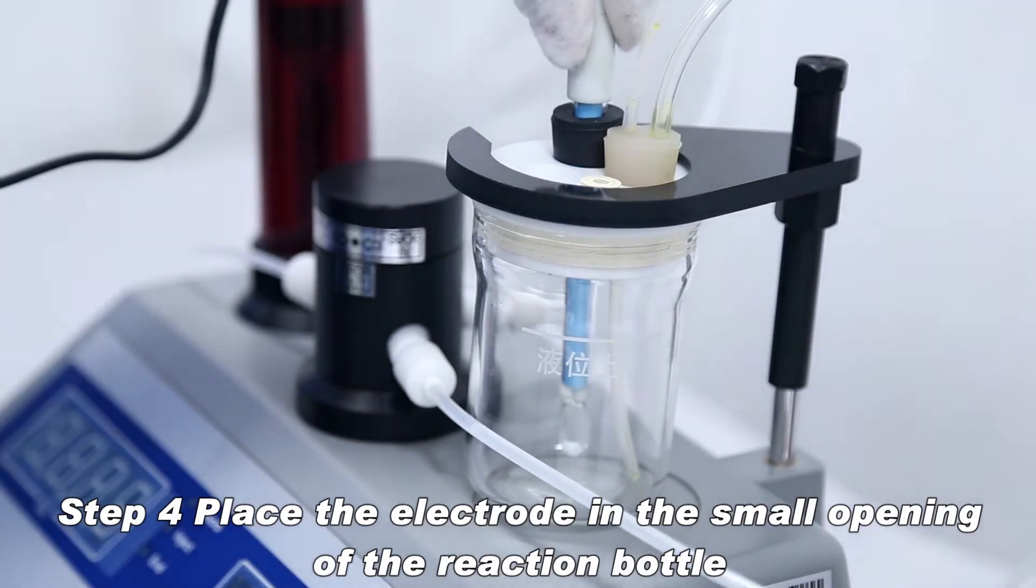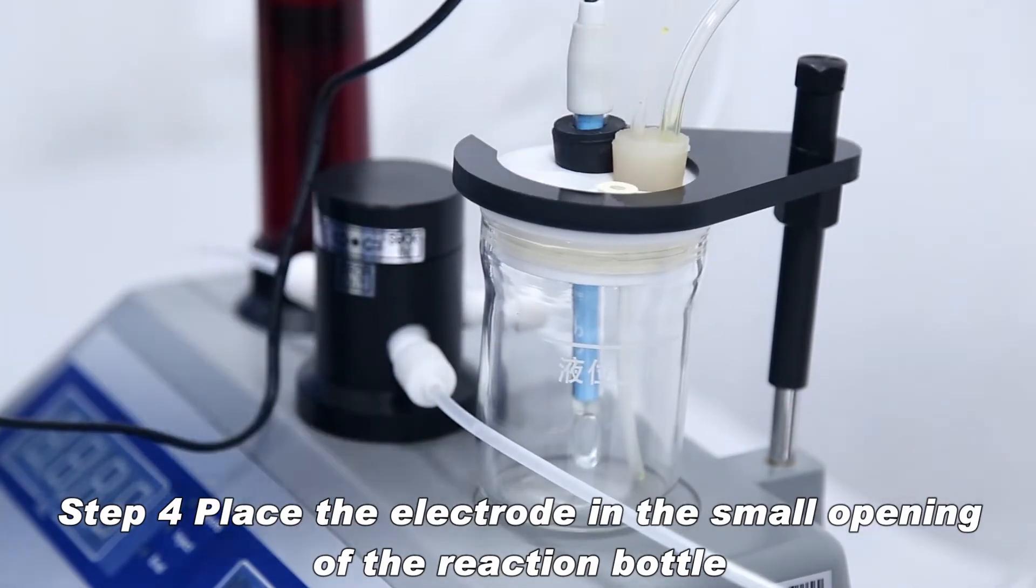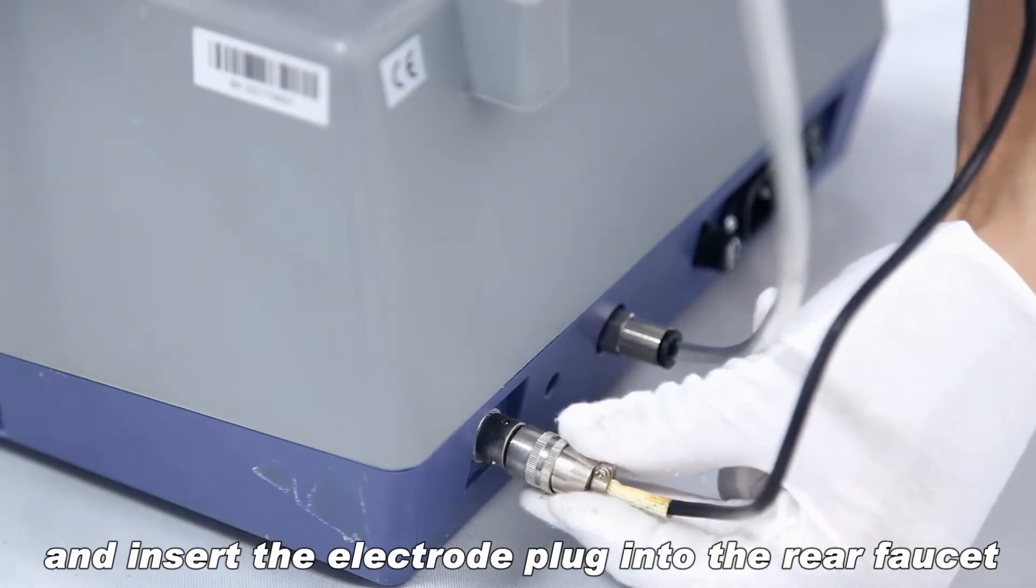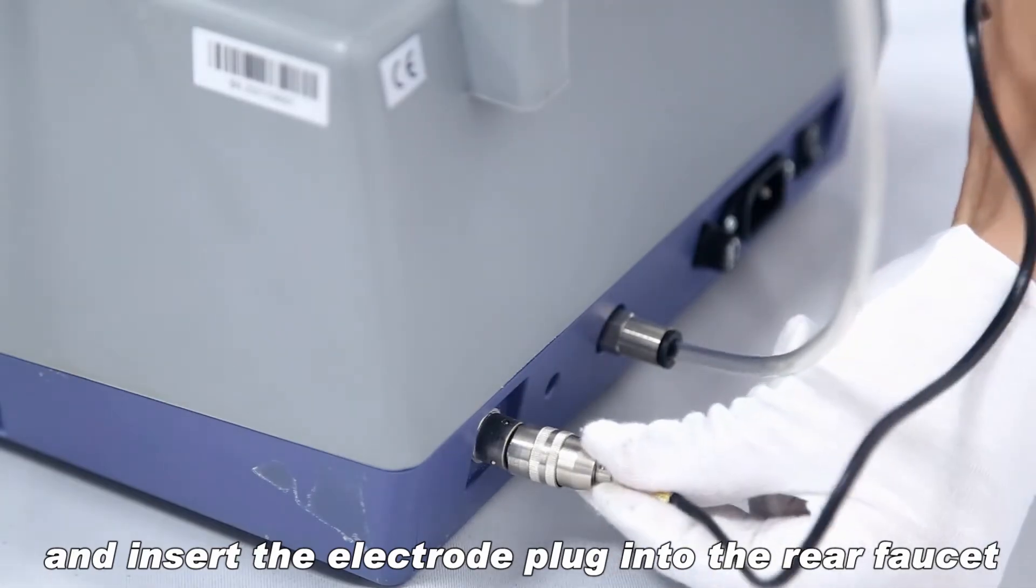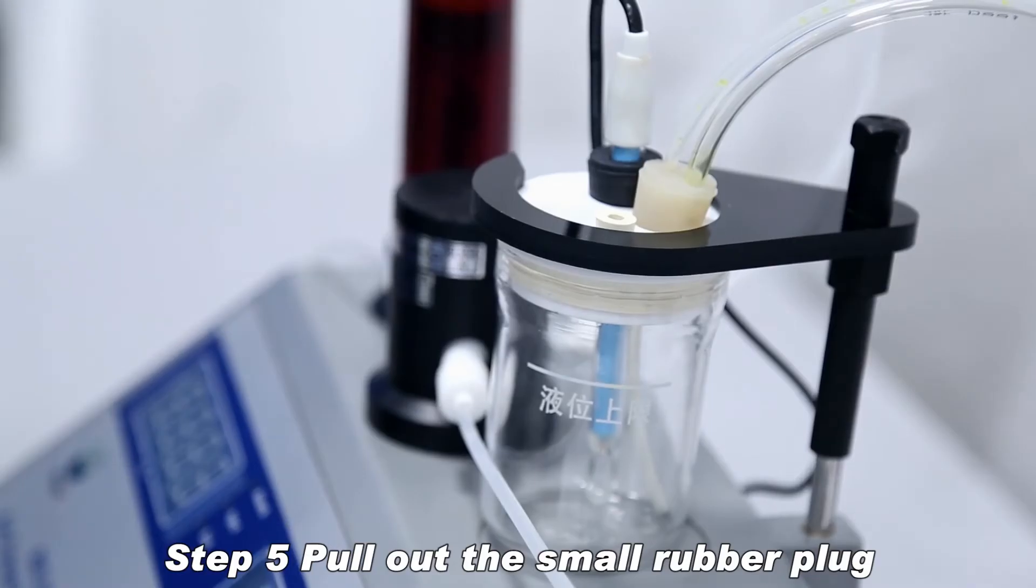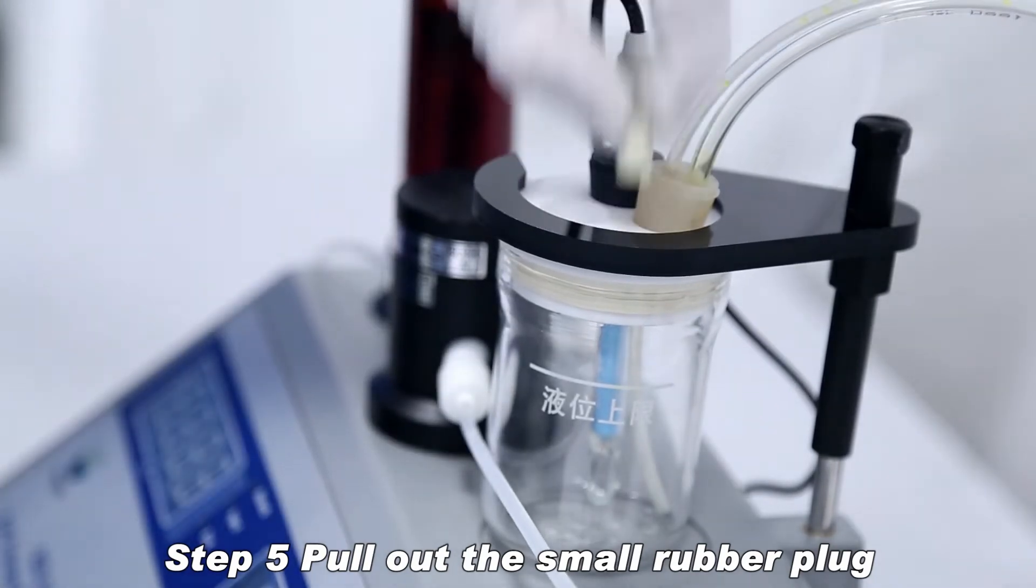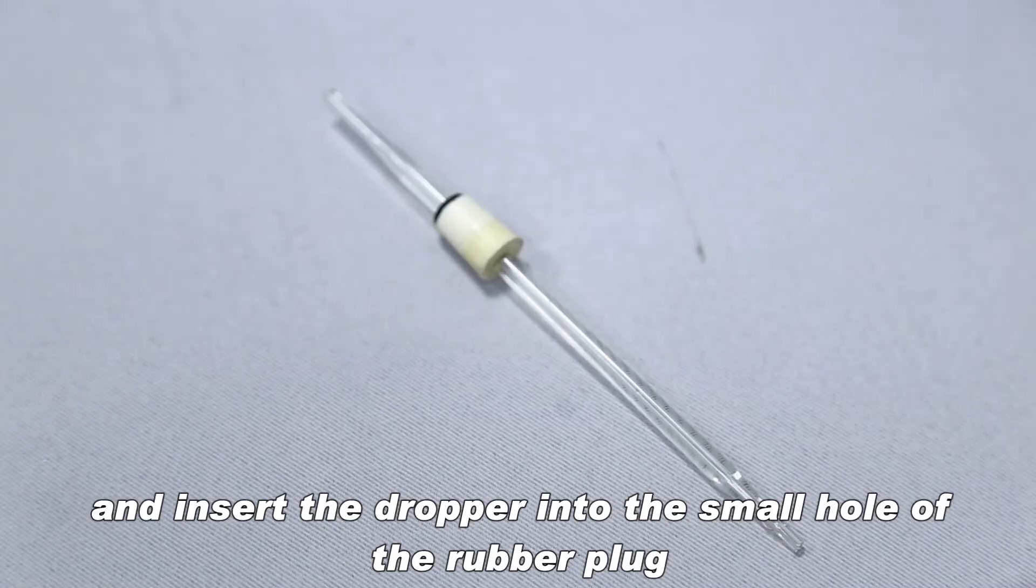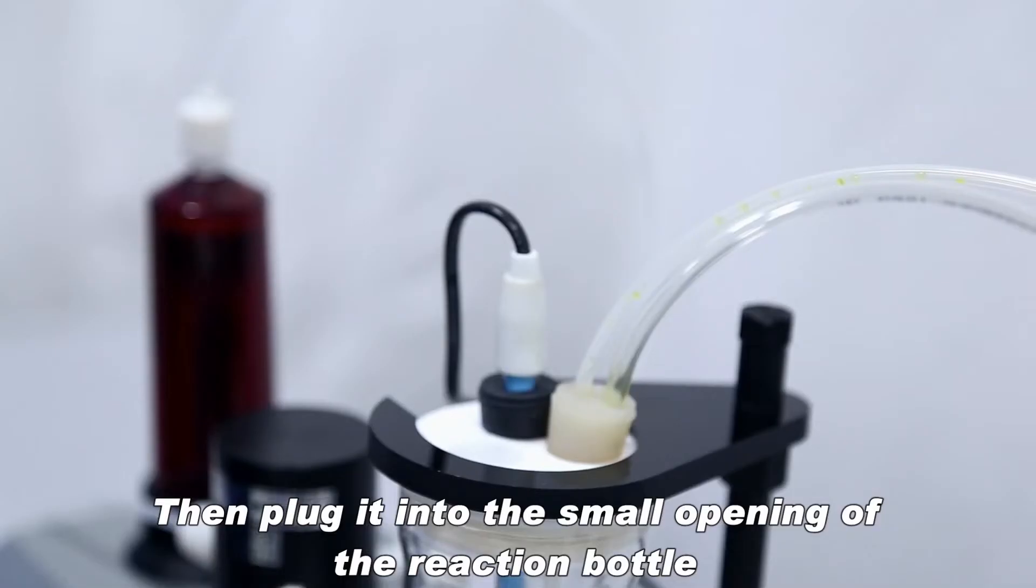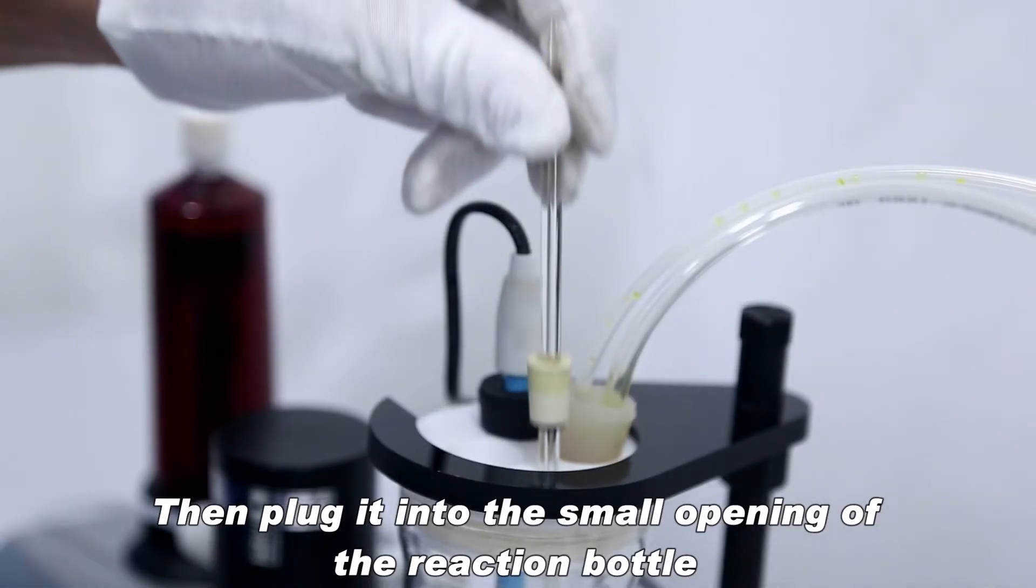Place the electrode in the small opening of the reaction bottle and insert the electrode plug into the rear socket. Pull out the small rubber plug and insert the dropper into the small hole of the rubber plug, then plug it into the small opening of the reaction bottle.